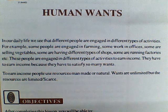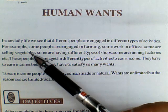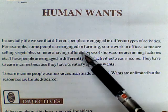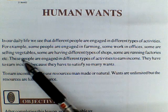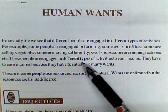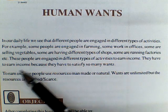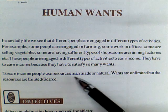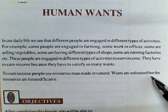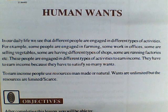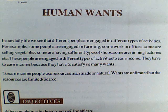Hello kids, today we will study Economics Chapter 2: Human Wants. In our daily life, we see that different people are engaged in different types of activities. Some people are engaged in farming, some work in offices, some are selling vegetables, some have different types of shops, some are running factories. These people are engaged in different activities to earn income, because they have to satisfy so many wants.